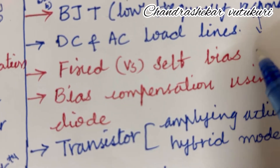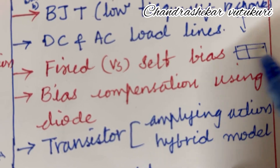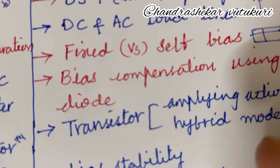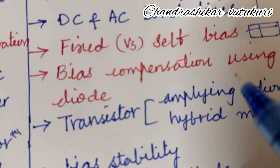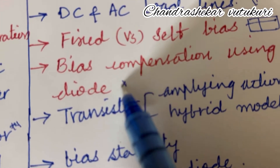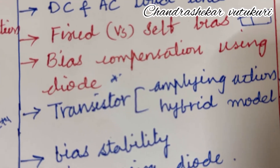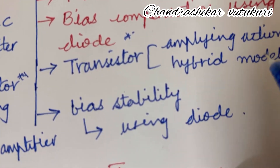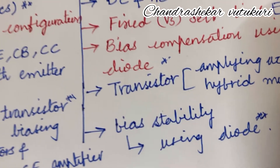Fixed, reverse, or self-biased — their differences: when a difference is given you are supposed to work out in a tabular column highlighting the important points. Write your exam very neatly with two sets of pens — one blue and one black — and do not forget to carry all your stationery to the semester end examination. Bias compensation and UTin diode is set as a short question. Transistor amplifying action and hybrid model is set as a long question under 3B. Bias stability and bias stability using a diode is also set as a short question.